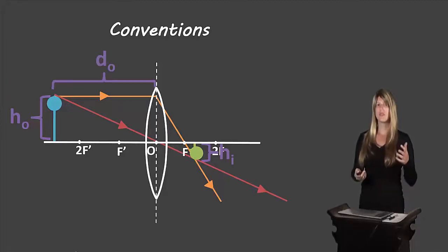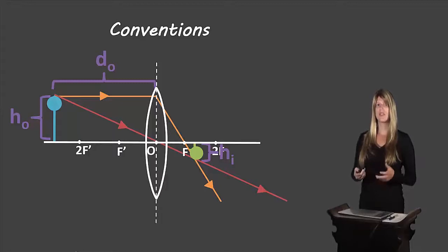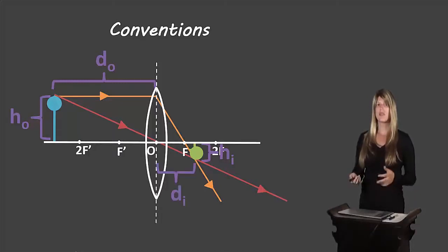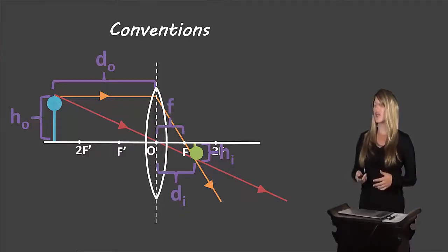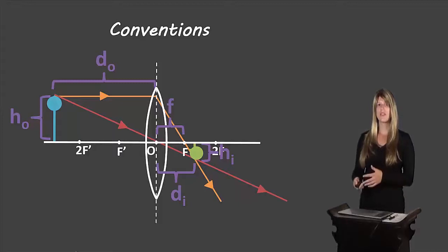The distance between the object and the optical centre is DO — D for distance, O for object. The distance between the image and the optical centre is DI — D for distance, I for image. And the distance between the optical centre and the focus is F, for focal length.